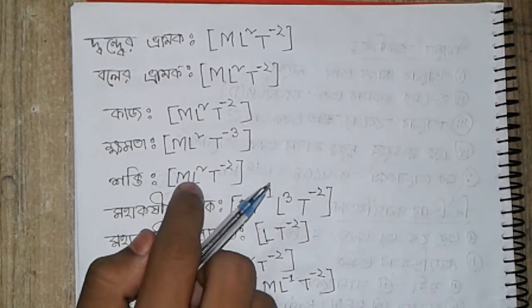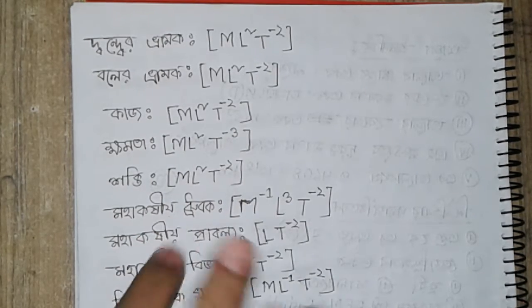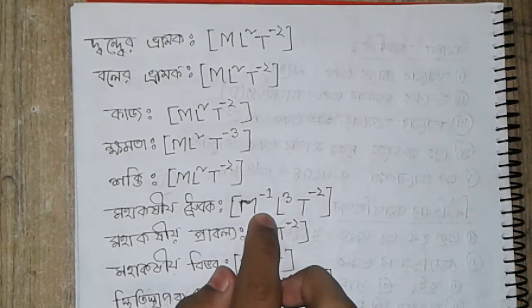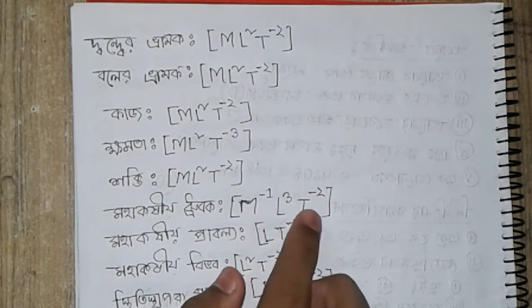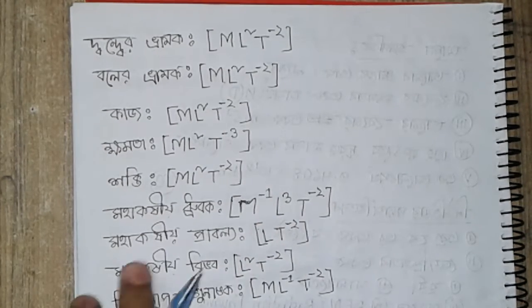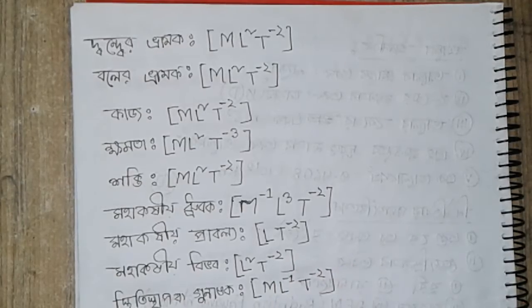The dimensional formula for various quantities: ML square T inverse two, M inverse one L cube T inverse two, and LT inverse two.